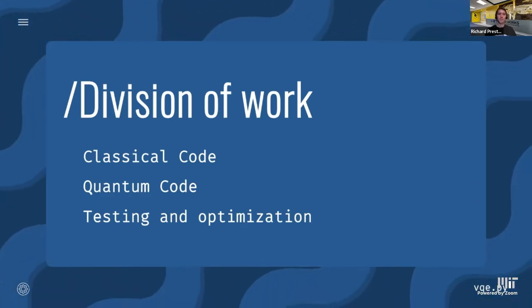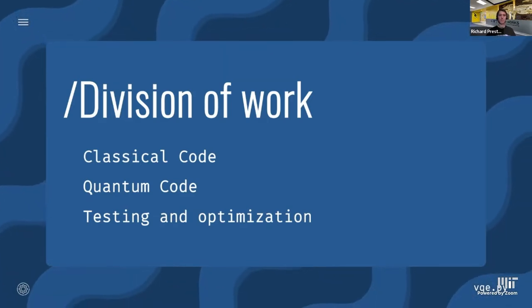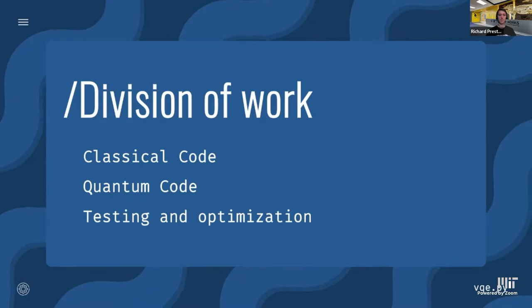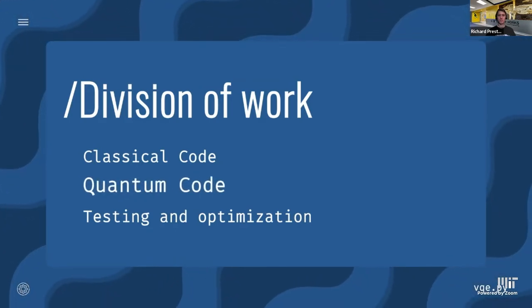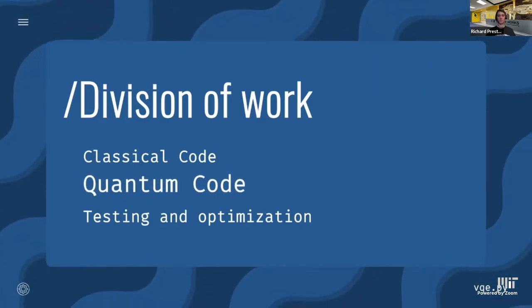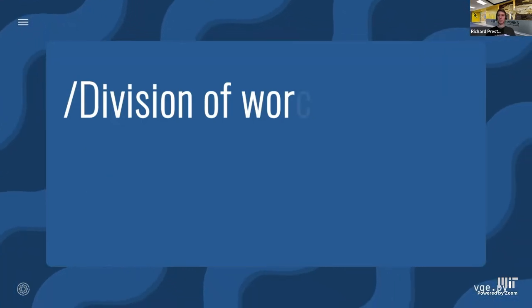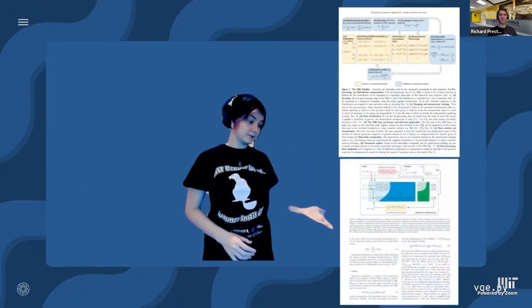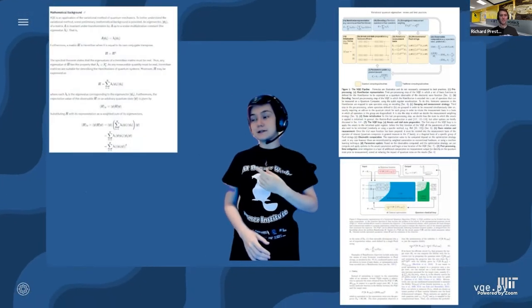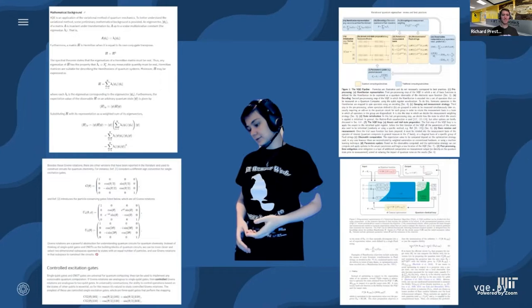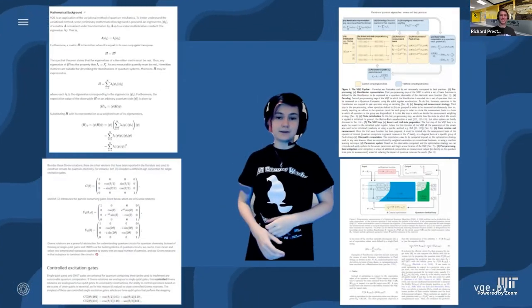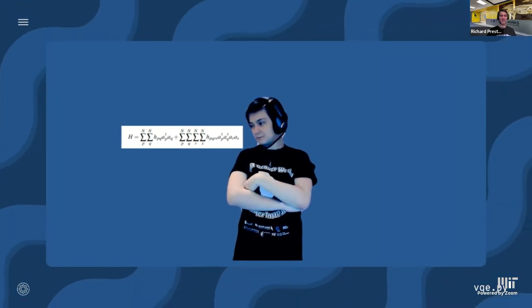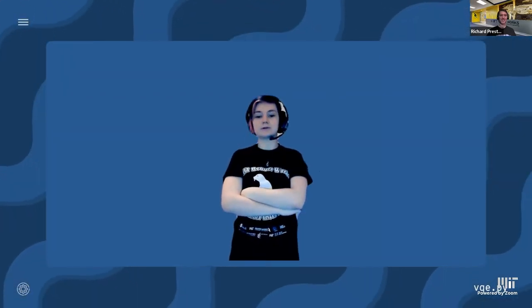It was difficult enough to understand what the algorithm was doing, but it was a completely different challenge to understand how to write it. After fumbling through the papers for a while, we decided to write only the quantum piece from scratch and import all the classical components from outside libraries. This paper explains everything one way, this one is 91 pages long and says something else, that one's outdated — we eventually found something that worked and had no further issues.